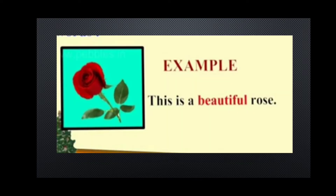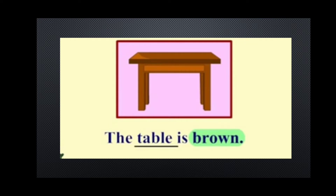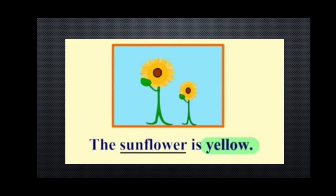For example, you can see: this is a beautiful rose. So, 'beautiful' here is the adjective — we describe the rose. Then, the table is brown. 'Brown' describes the table, which is a thing. So, brown is the adjective and table is a noun. Then, the sunflower is yellow. 'Yellow' is the adjective which describes the sunflower. Sunflower is the noun.